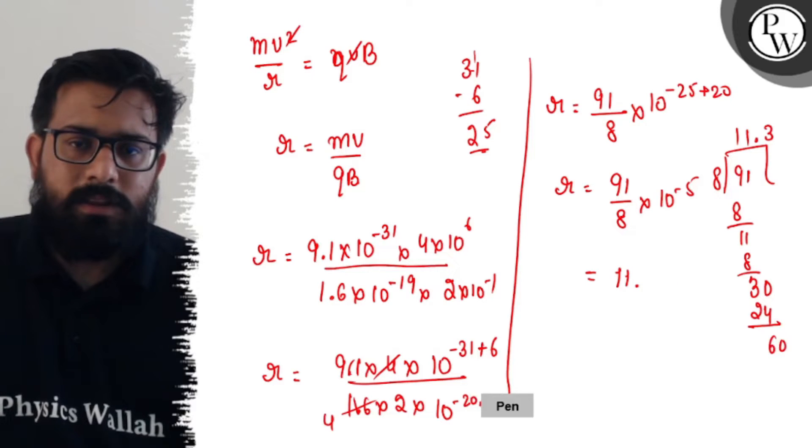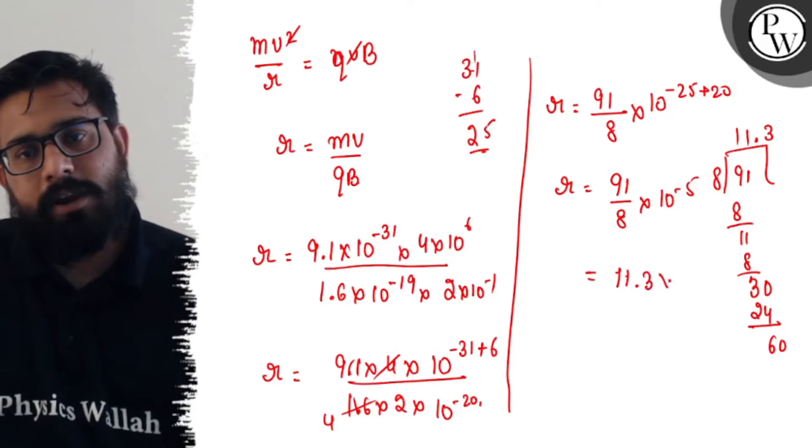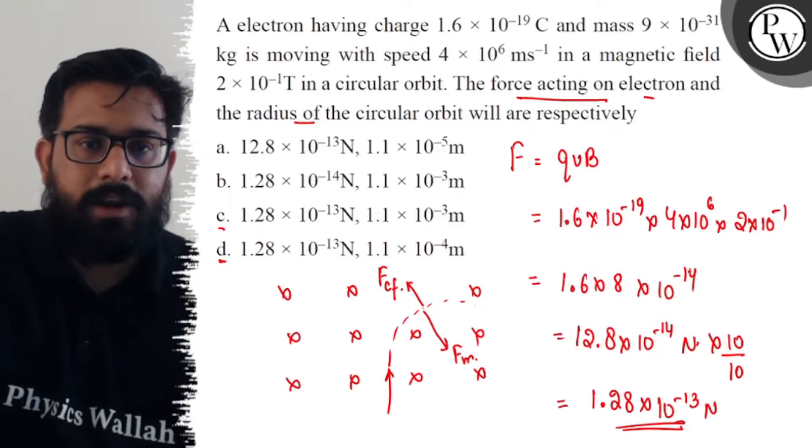This can further be solved then you will get the value. It comes out to be 11.3 × 10^-5 meter. Let's see from the options if this matches.